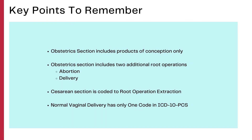Key points to remember: the obstetric section includes products of conception only; the obstetric section includes two additional important root operations — abortion and delivery; cesarean section is always coded to the root operation extraction; and normal vaginal delivery has only one code in the ICD-10-PCS. These are the most important points from this video.